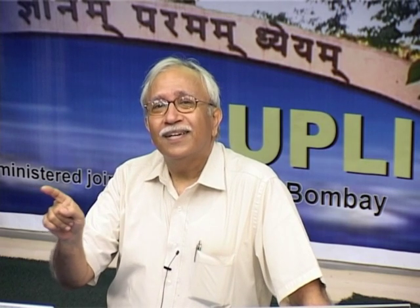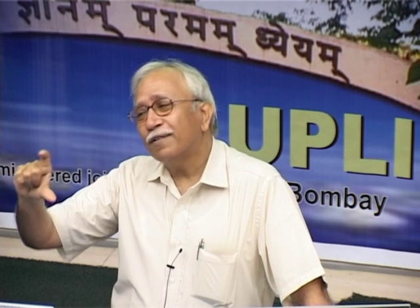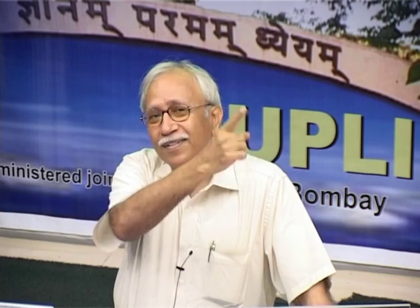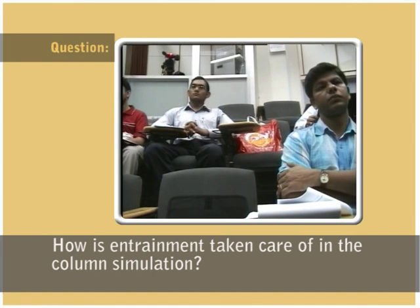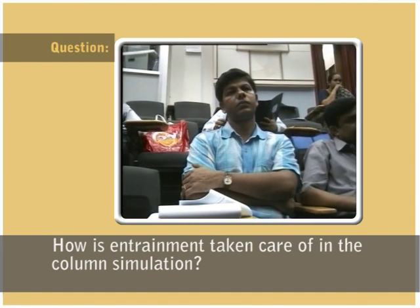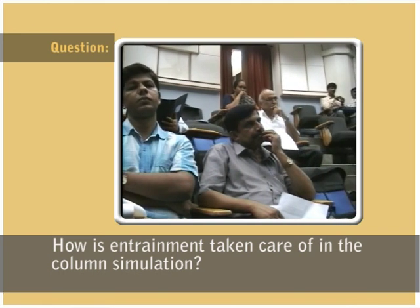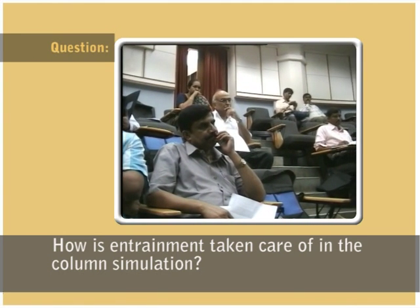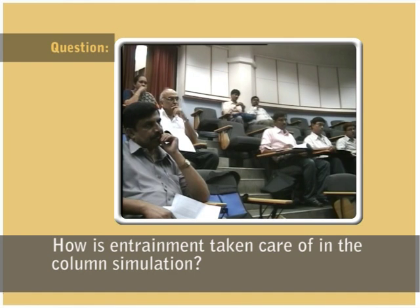Within a tray, the liquid height on the weir side differs from the other side due to gradients, so efficiencies vary because bubbles spend different amounts of time in different regions. MESH equations do not account for these effects, so solving the MESH system does not reproduce what an actual column shows. There is a mismatch between simulated and actual results, and one approach to close this gap is to observe what is happening in the actual plant, where entrainment is present and there is no theoretical-stage concept.